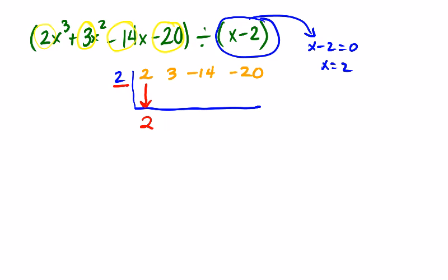Then you multiply the outside numbers together. So 2 times 2 is 4. And then on the inside, you add down. So 3 plus 4 adds to 7. And then you multiply once again the outside numbers. So 2 times 7 is 14. We're feeling good. Then we add down. Negative 14 plus 14 is 0.